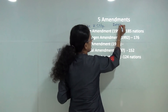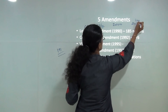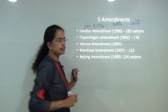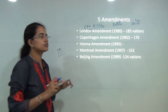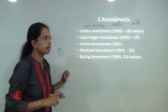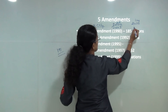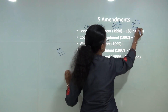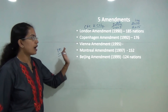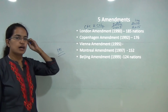The London Amendment also talked about methyl bromide, proposing its phaseout by 2005 in developed nations and 2015 in developing nations. The Copenhagen Amendment mainly focused on capping methyl bromide production.